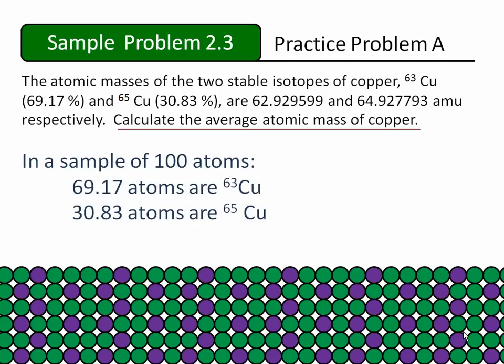Based on our percentages, we know that if our sample consisted of only 100 atoms, 69.17 of those atoms would be copper-63, and 30.83 of the atoms would be copper-65.